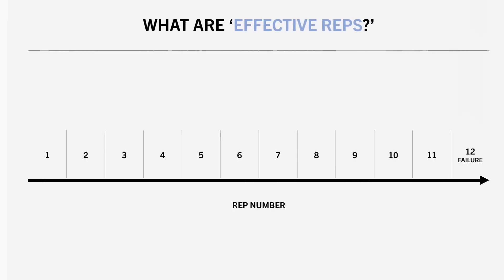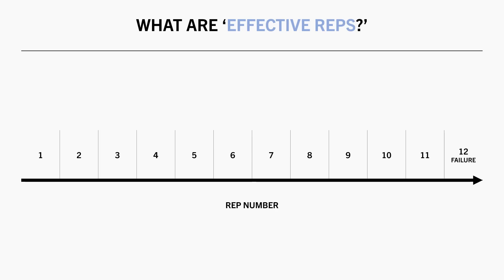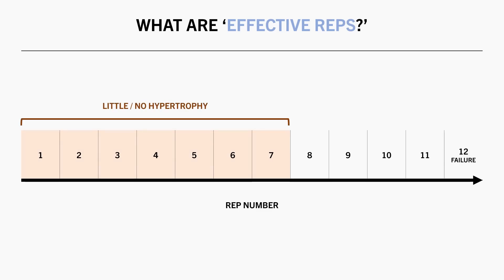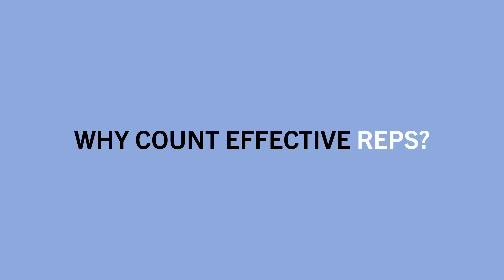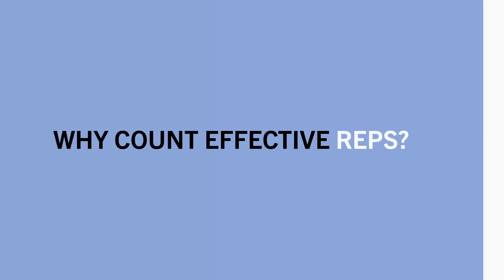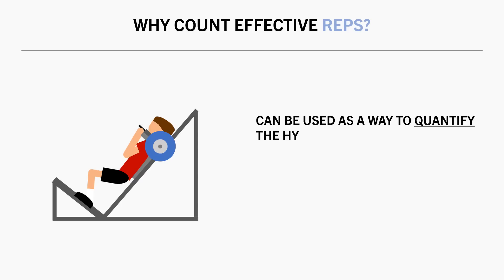For example, let's say we performed a set of 12 reps to failure. The effective reps model would suggest that the first 7 reps do nothing or very little to stimulate muscle growth. It is not until you perform the last 5 reps which are closest to failure that you get the vast majority of the hypertrophy stimulus. So, what is the purpose of the effective reps model? The idea is that trainees can roughly quantify the number of effective reps they perform as a way to quantify the hypertrophy training stimulus.